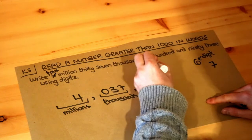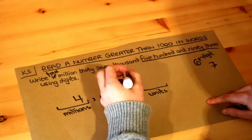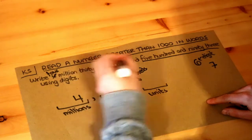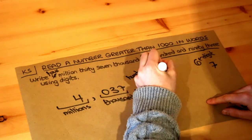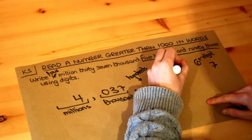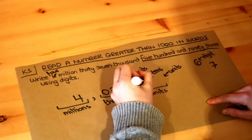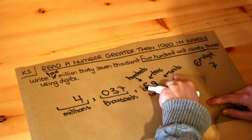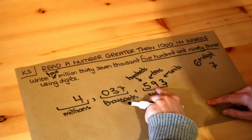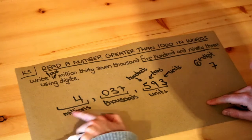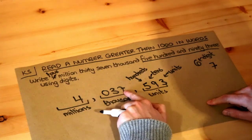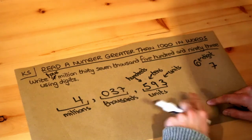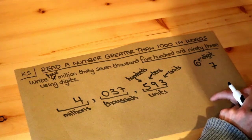Finally, what do we have in the units, tens, and hundreds section? We've got five hundred and ninety-three. The hundreds digit is five, the tens digit is nine, and the units digit is three. So putting this all together we've got four million, thirty-seven thousand — making sure we put that zero there so we have three digits between the two commas — and then five hundred and ninety-three at the end: 4,037,593.